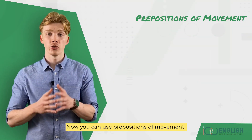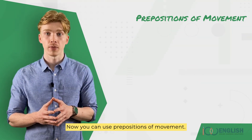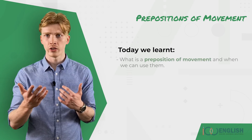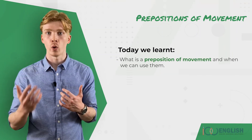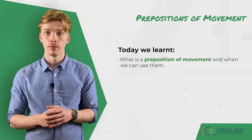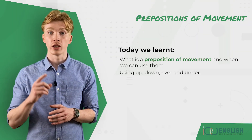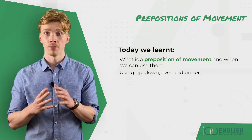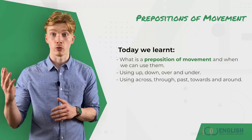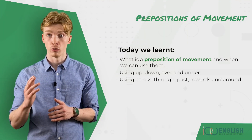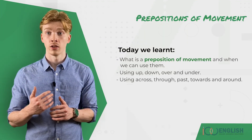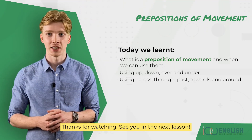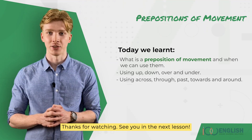Now you can use prepositions of movement. Today we learned what a preposition of movement is and when we can use them: using up, down, over and under; and using across, through, past, towards and around. Thanks for watching. See you in the next lesson.